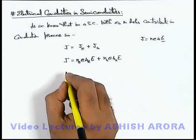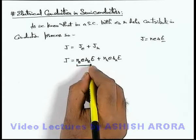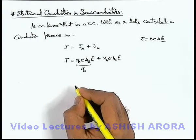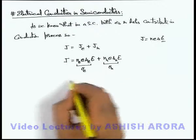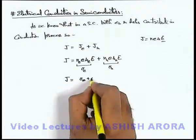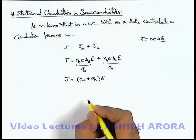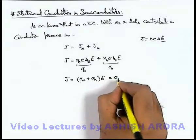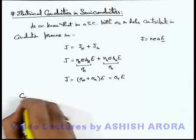So in this situation, we can write n_e·e·μ_e as σ_e, that is conductivity due to electron transportation, and this is the conductivity due to hole transportation. Then this current density we can write as σ_e plus σ_h multiplied by the applied electric field. So in this situation this can be written as σ·E, and here we can write that conductivity